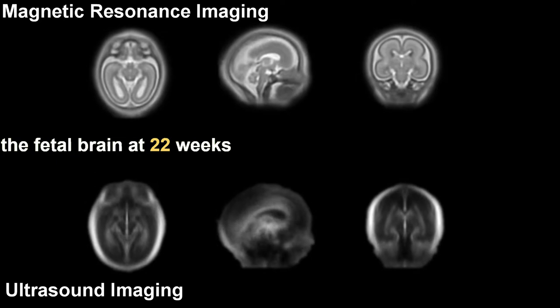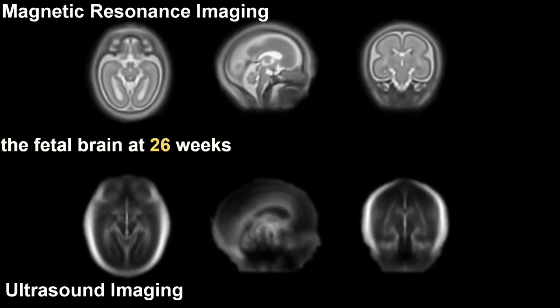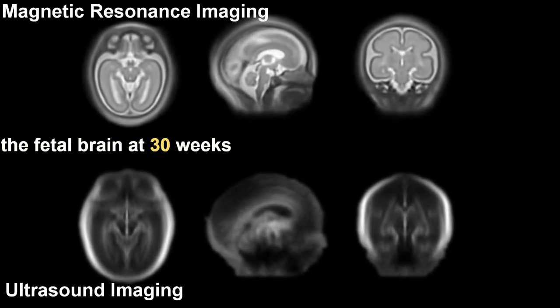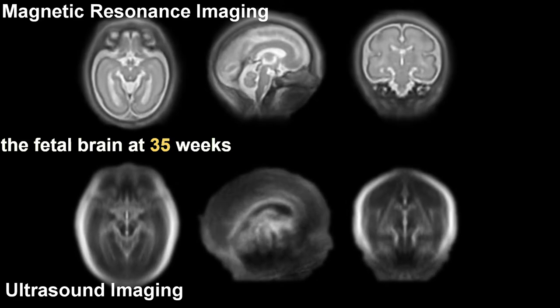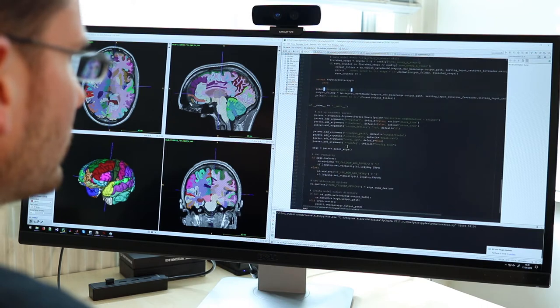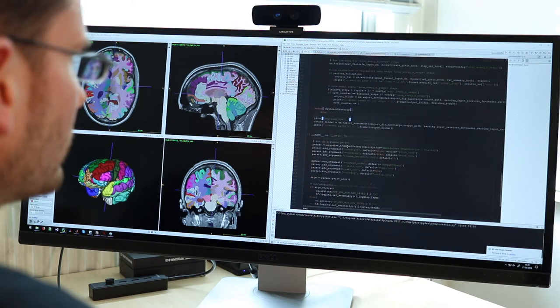We study human health and disease from the beginning of life in the womb to old age. We would like to understand the development and the inner workings of the human brain. Another application of research in our group is the interpretation of brain images. We are using machine learning tools to try to help us identify those patients who develop diseases such as Alzheimer's disease or other forms of dementia.